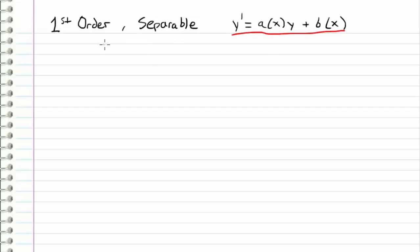So in the previous video we looked at the differential equation that had a form of y prime is equal to ay plus b, where a and b were both constant coefficients.